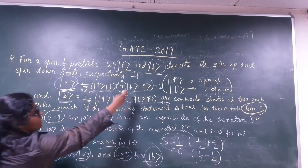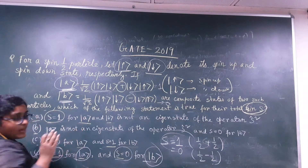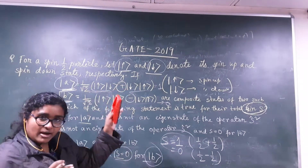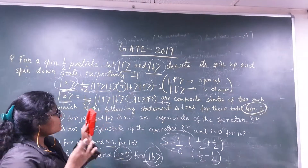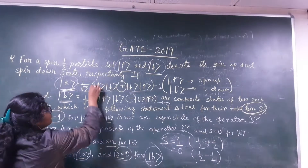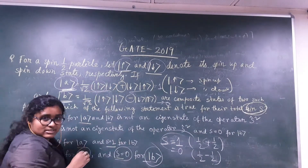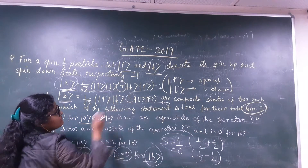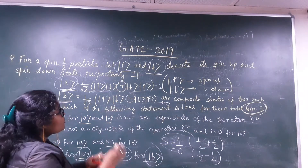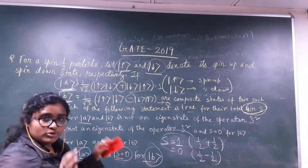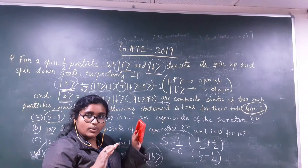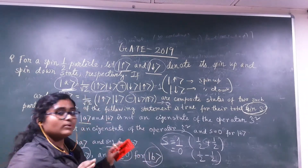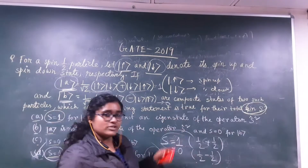What you have to understand is the meaning of spin-up and spin-down and what these two composite states represent. The plus and minus signs in the states decide whether both spins are aligned or one is up and one is down. In this way, you can easily solve this kind of question.